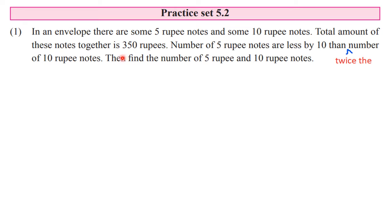First we need to understand the problem. There are two types of notes: 5 rupee notes and 10 rupee notes, and those are what we have to find out. Whatever we want to find out, we need to assign variables x and y. For 5 rupee notes we will take x and for 10 rupee notes we will take y. So: let the number of 5 rupee notes be x and that of 10 rupee notes be y. In this way we have assigned the variables.